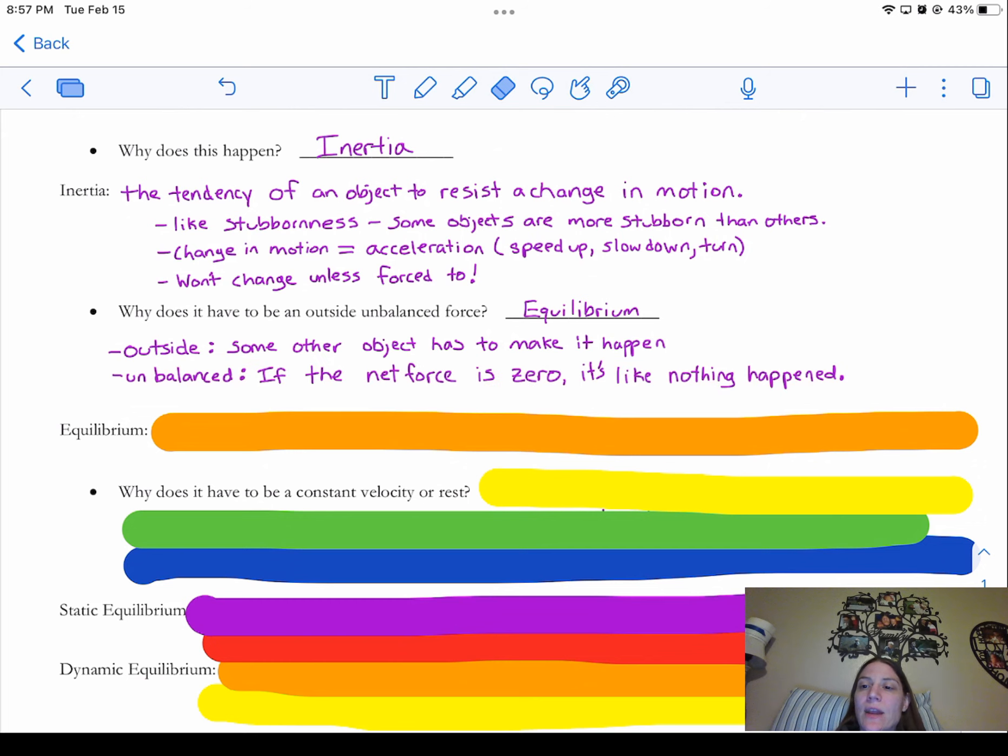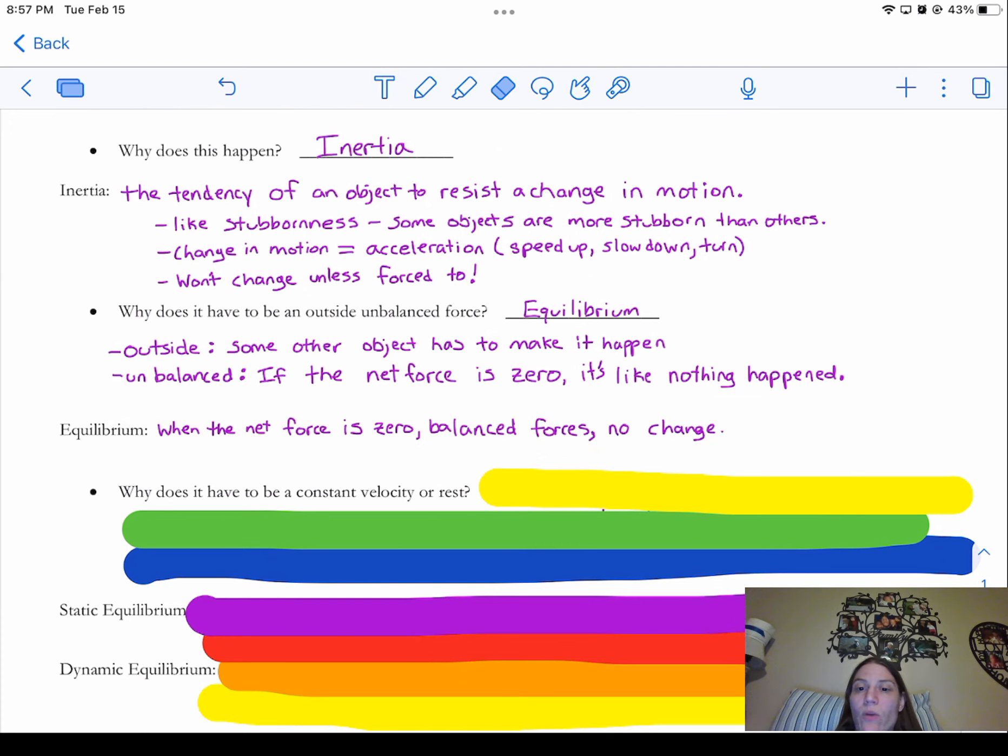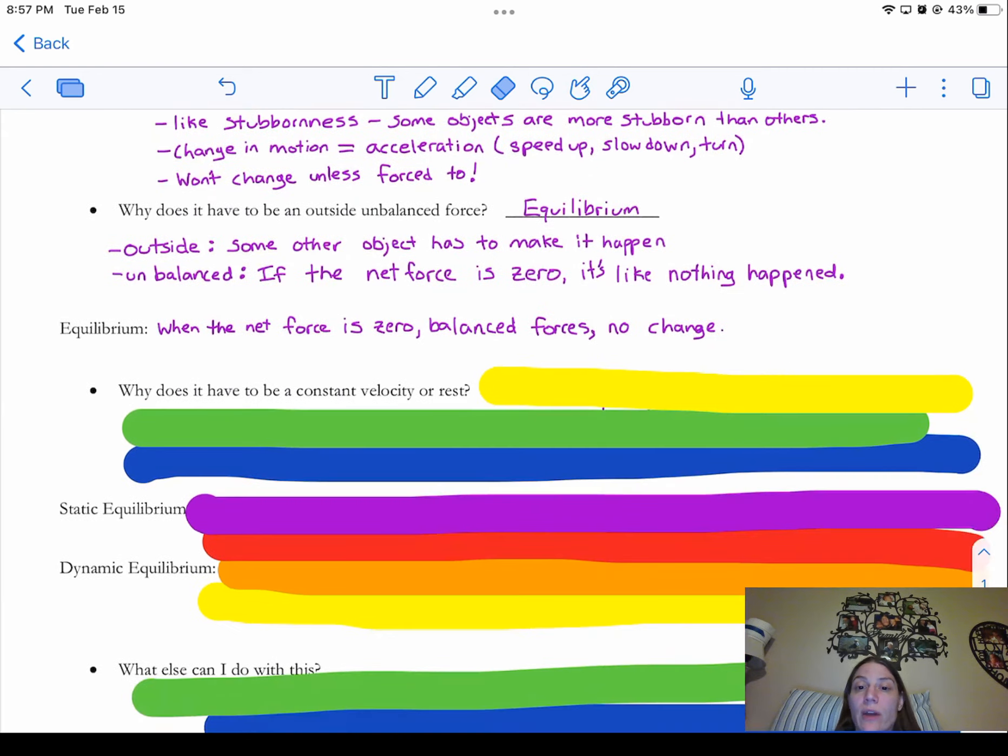It has to be an unbalanced force because if the net force is zero, it's like nothing is happening. If the net force is zero, it's like there's no force, right? So we call that equilibrium. When the net force is zero, when there's balanced forces, there's no change. We call that equilibrium. That's just the word that we use to describe that.